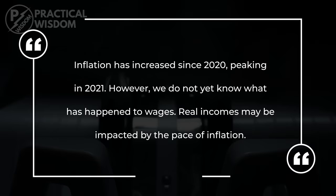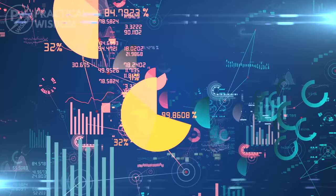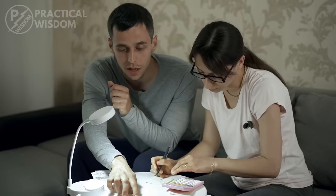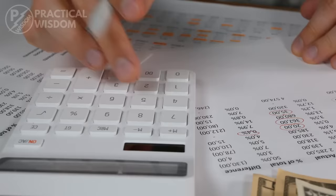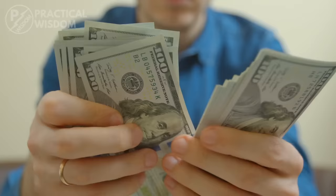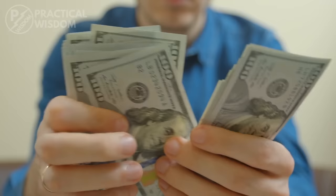The average household net worth in the United States in 2019, the most recent statistics available, was $445,900, according to data from the United States Census Bureau. $118,200 was the median net worth. This is a significant disparity, demonstrating how wealth concentration among the wealthiest households can affect the average.